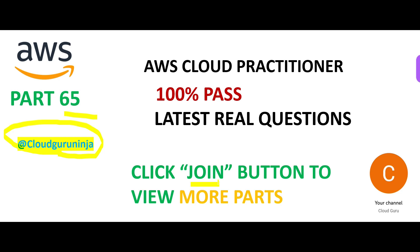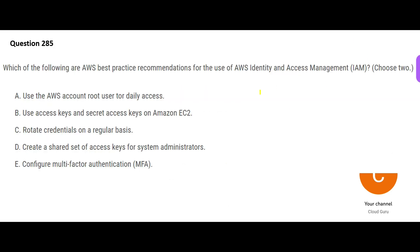Let us look at the next question: which are the best practices for IAM? IAM is used whenever someone wants access to your system — you create an IAM to handle authentication and authorization. Authentication is primarily done by IAM, while authorization is handled by the application, sometimes in combination with Active Directory.